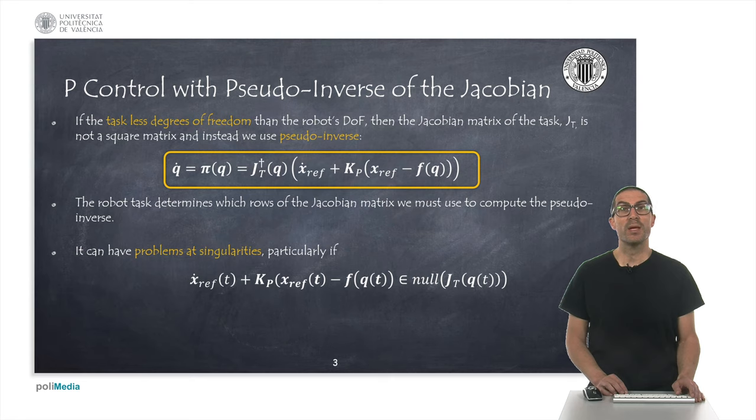However, there might be additional issues if the right side term that multiplies the pseudo inverse lies in the null space of the robot Jacobian. In those cases, the robot will not move and will get trapped in that configuration unless the reference velocity changes.